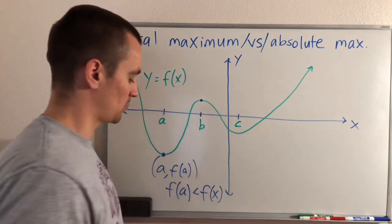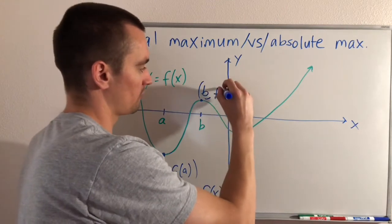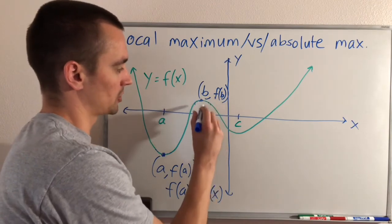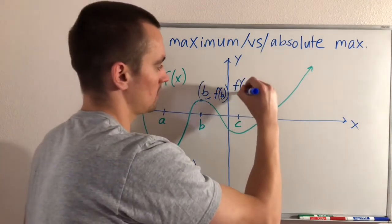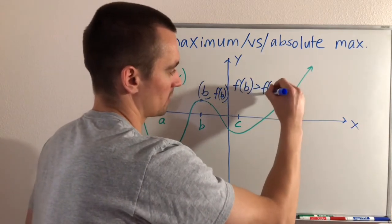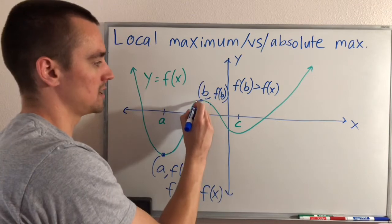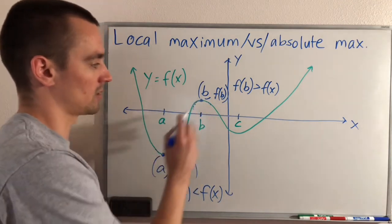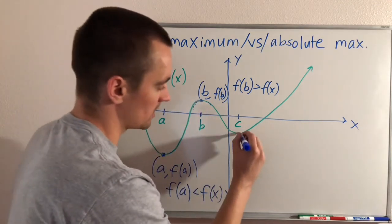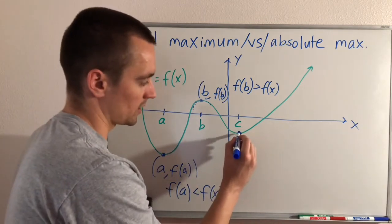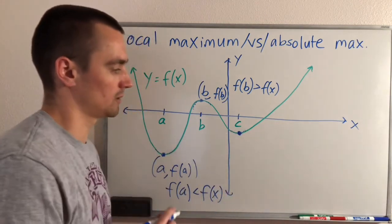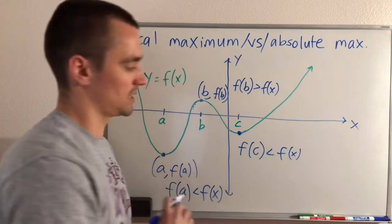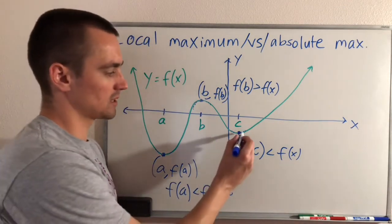Similarly, if we look at this point b — that is higher than all the other points on our function around it. f of b is greater than all other f of x values; no matter what x we pick near b and plug into our function, we'll get smaller outputs than f of b. So that is a local maximum. And then this point c down here is lower than all the other points around it, so f of c is less than all other f of x values in the area around there — making it a local minimum.